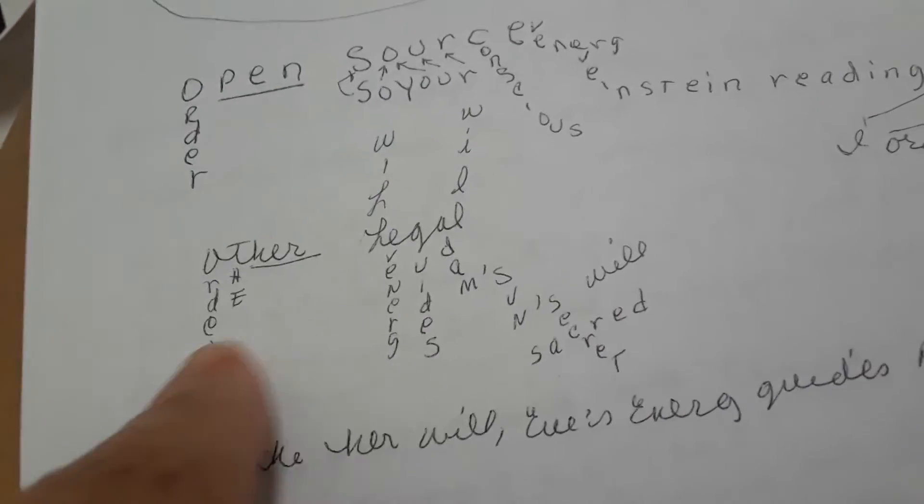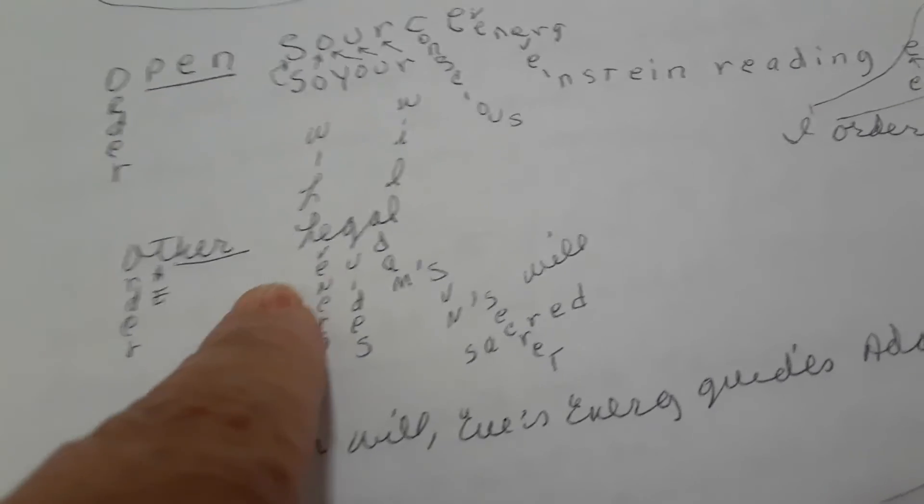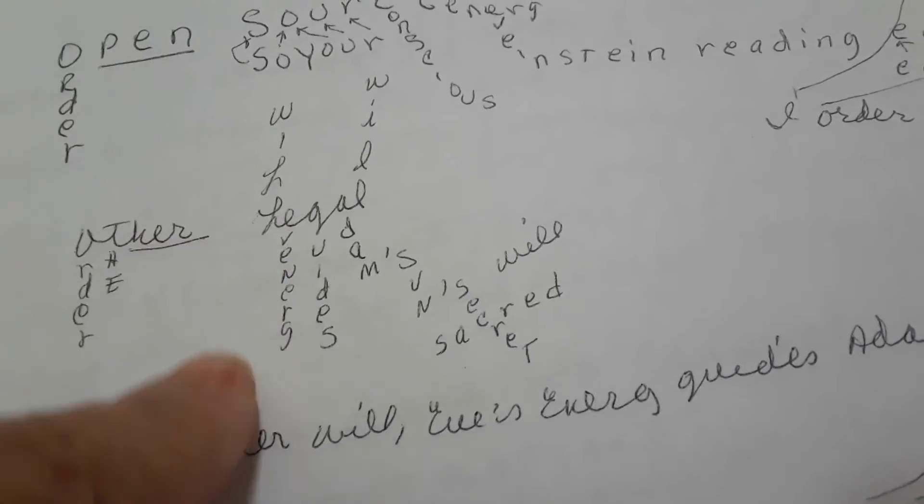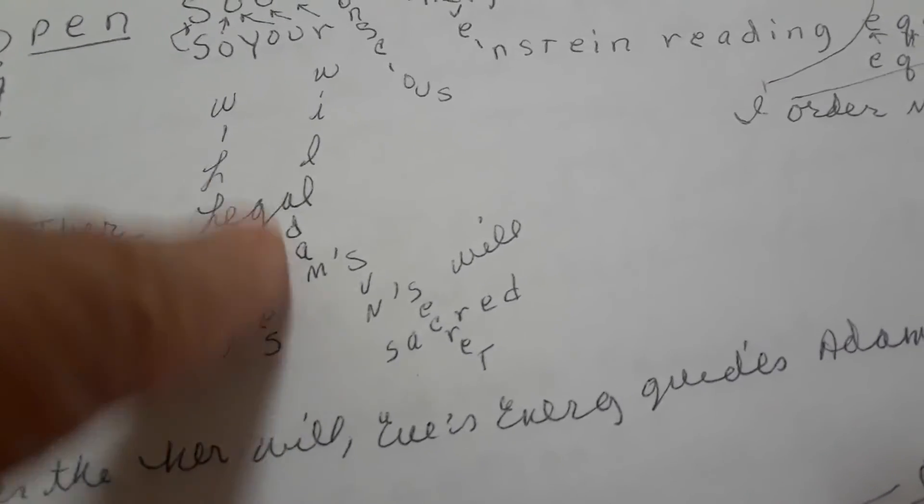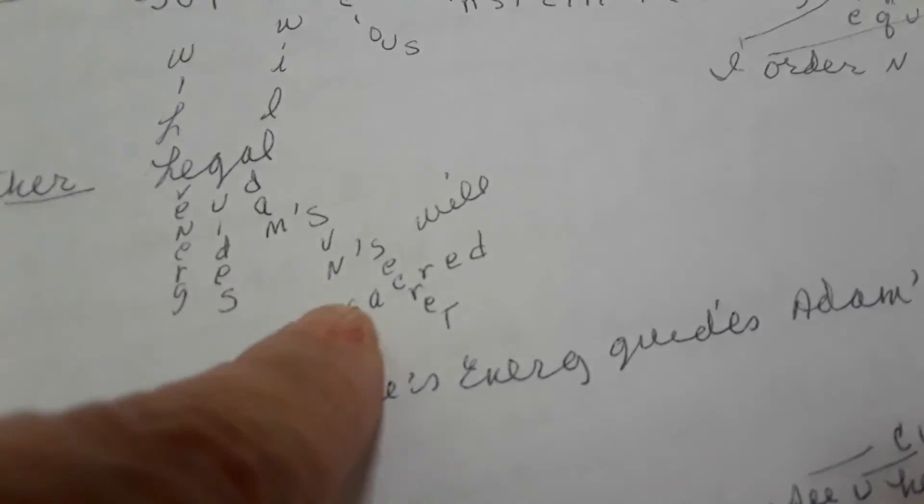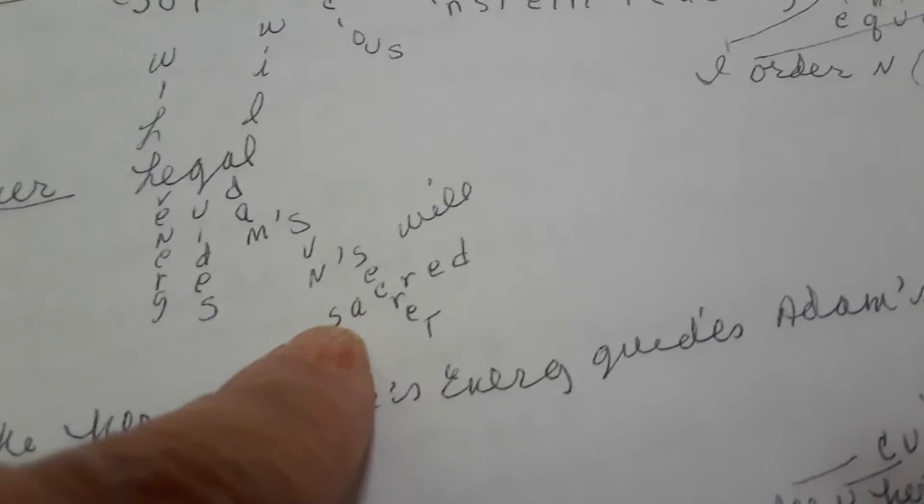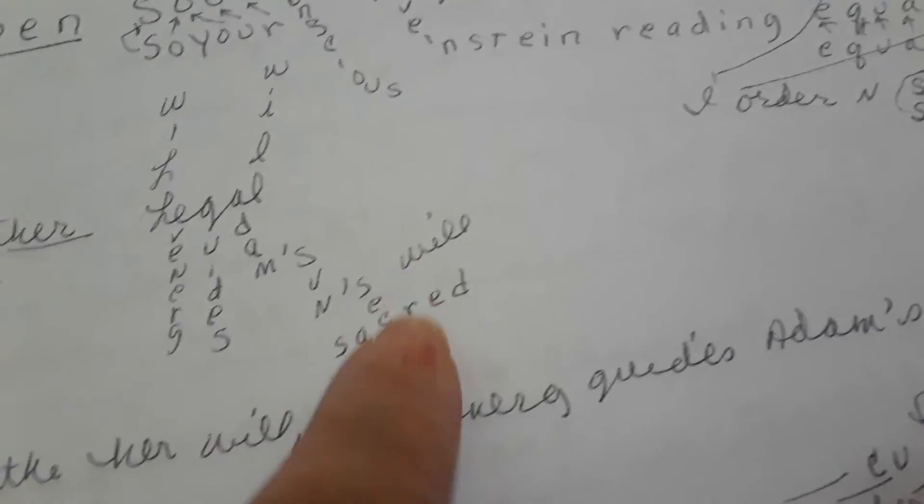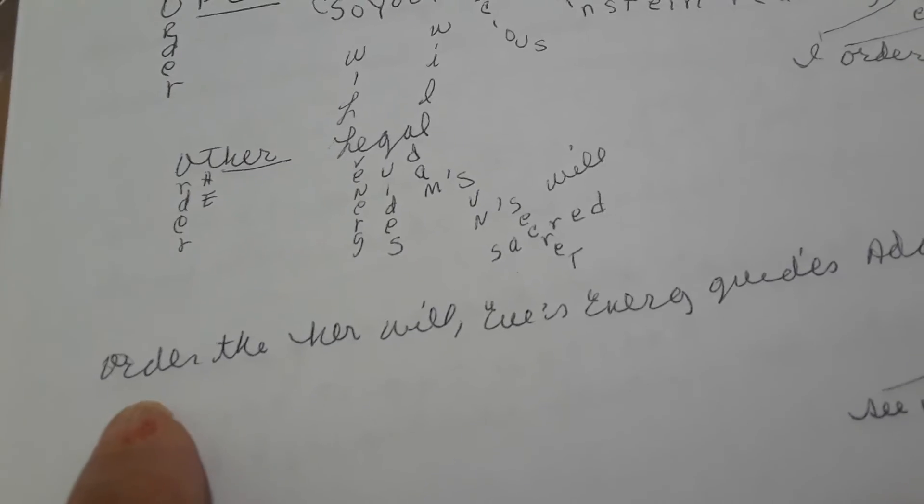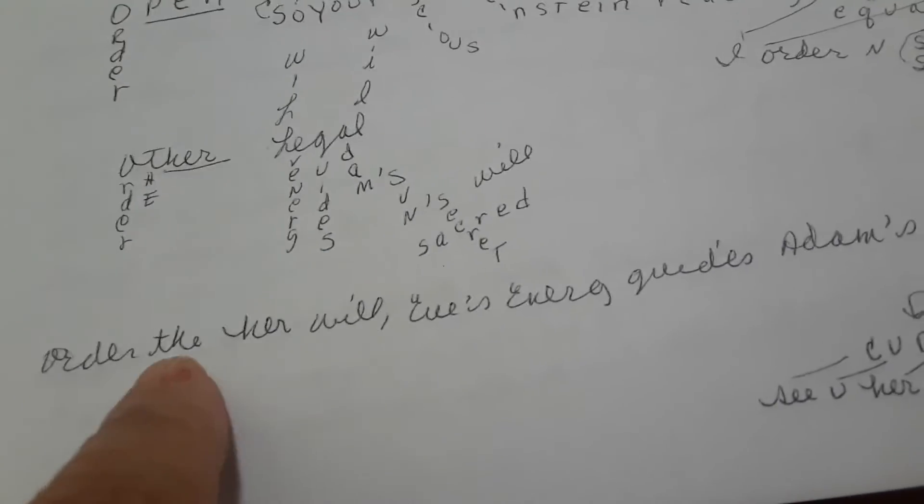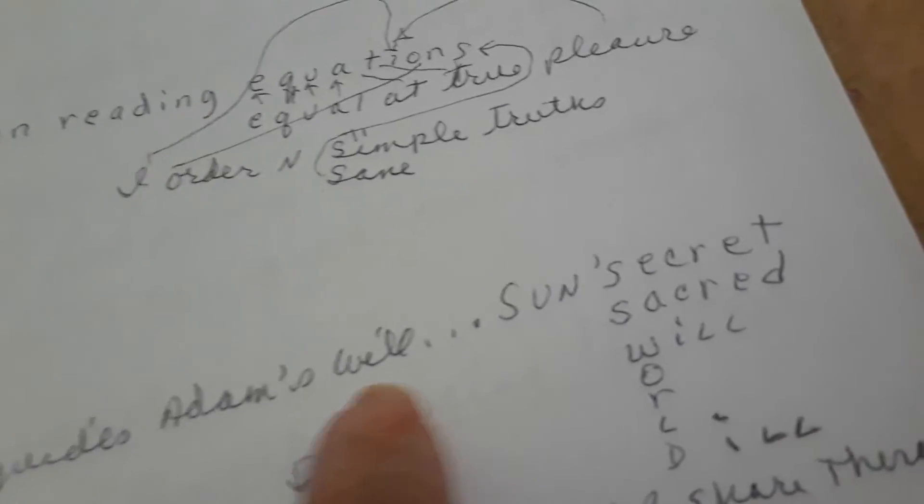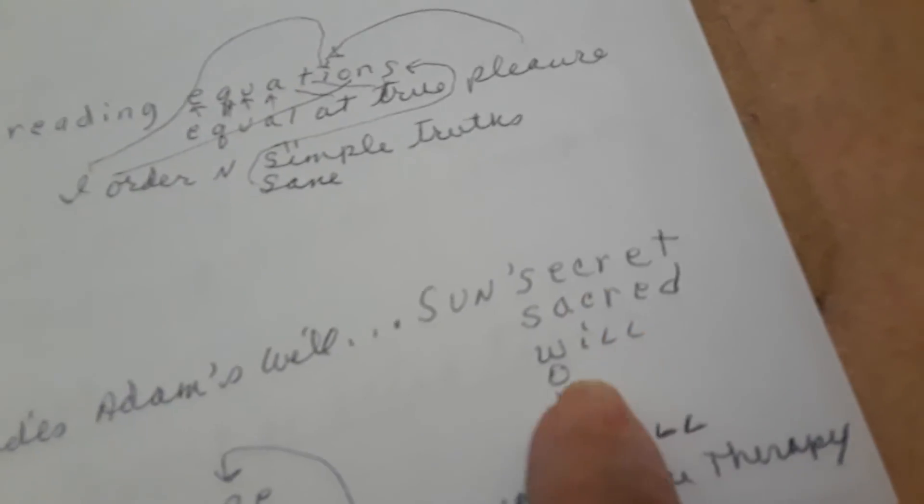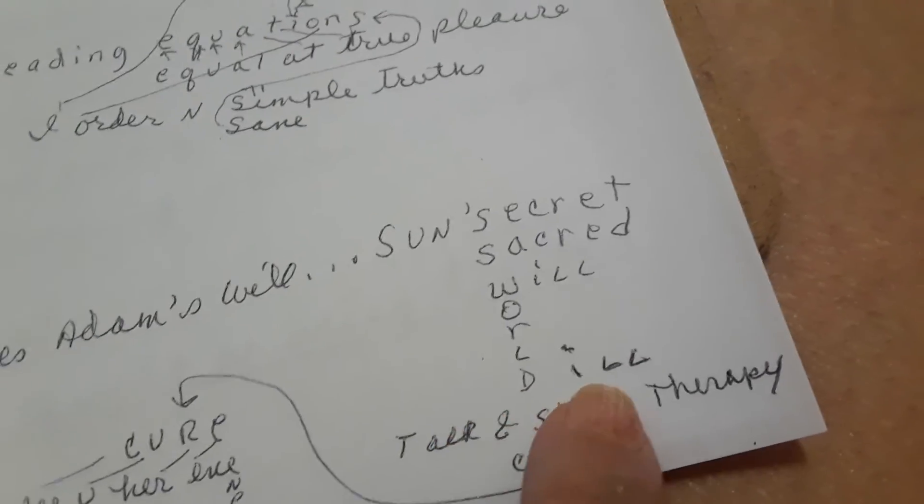Other. Order the her legal. Will Eve energy guides Adam's will, the sun's secret sacred will. Okay, Adam's will is the same as God's will. Order the her will. Eve's energy guides Adam's will, sun's secret sacred will. World is ill.